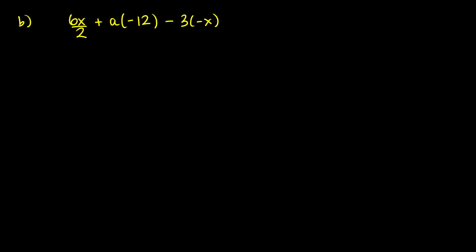So the second one's a little bit more complicated. We have division, we have adding a negative number, and we're subtracting three times a negative variable. So I want to do this step by step.